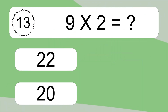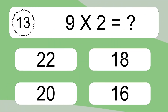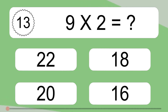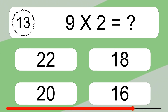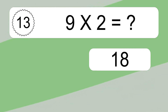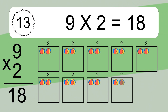9 times 2 equals what? 9 times 2 equals 18.